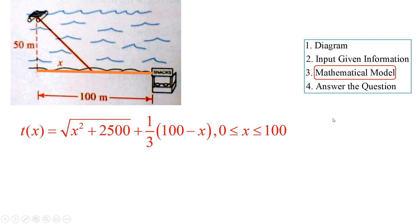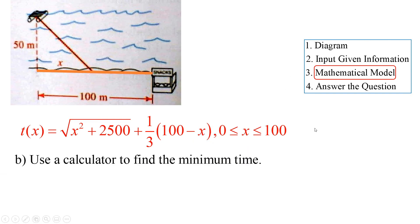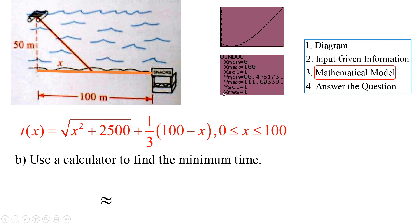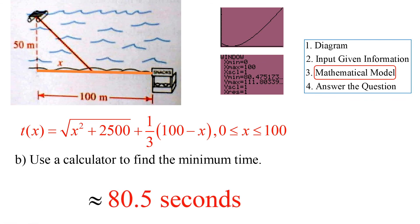Using a calculator, enter y₁ equals root(x² plus 2500) plus one-third times (100 minus x) with x window from 0 to 100. Finding the minimum with the calc min function gives approximately 80.5 seconds as the minimum total time.